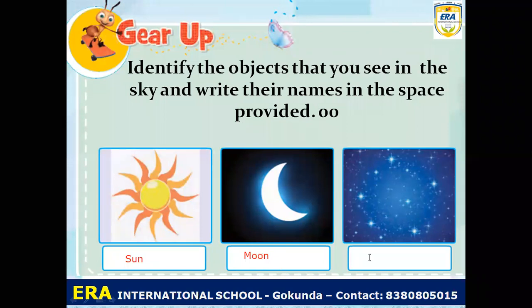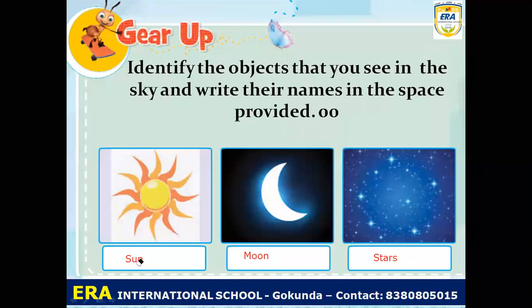And the third one is the stars, or the sky. These are the celestial bodies present in our sky. The sun gives us light. The moon is bright at night. And these are the stars, which we can see at night. This is a part of our solar system.